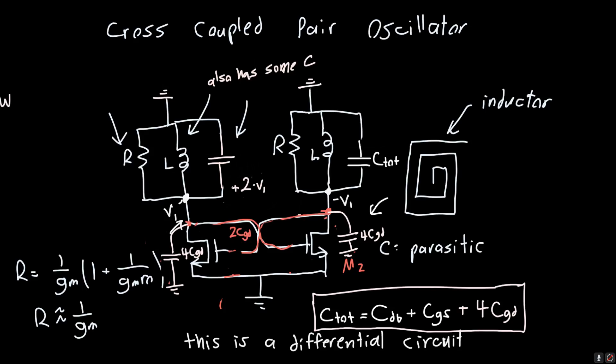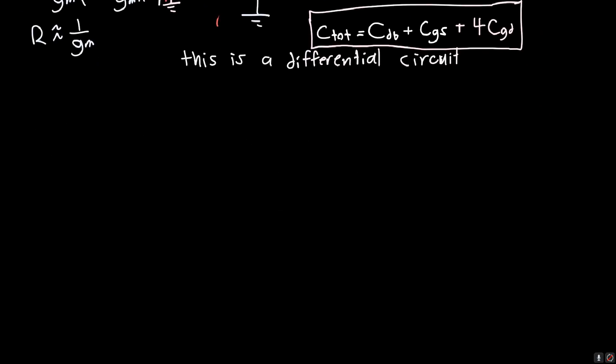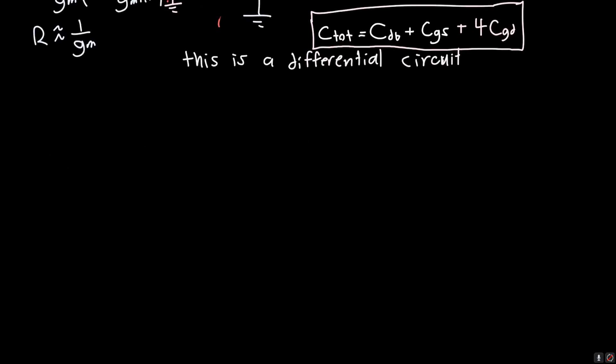And now we know that the total oscillation frequency, or the oscillation frequency omega, the frequency of oscillation, is just going to be 1 over the square root of L, which we introduce times C. So we can set the oscillation frequency by setting this inductance, which is cool. Now one last thing we want to go over is a practical consideration.